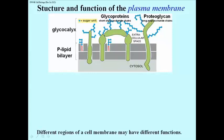Also shown but not labeled are phospholipids to which sugars have been attached — these are glycolipids, and we saw an example before. As noted at the bottom of the slide, different regions of the cell membrane can have different functions.